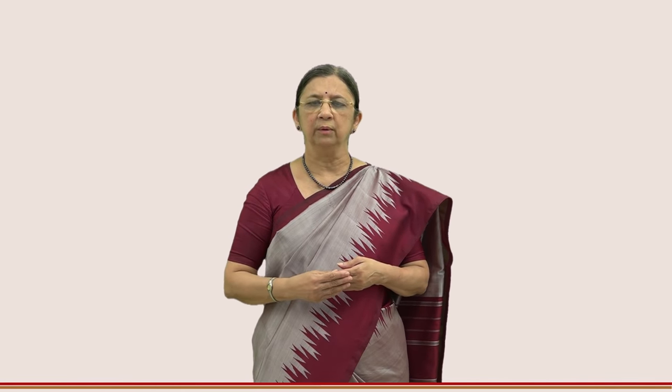In the numerical rating scale it is also possible to divide it into several sub-points, each given a score. For example, a rating scale on problem solving ability can be divided into four areas: defines the problem (2 points), identifies cause of the problem (3 points), identifies possible solutions (3 points), and recommends the solution (2 points). The total is 10 points.